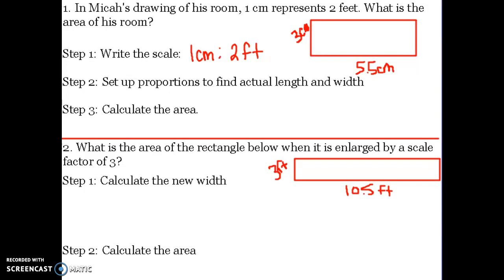Once you know your scale, you set up proportions to find the actual length and width. For my proportion, the scale is one centimeter to two feet, and I'm going to set that equal to the width, which is three centimeters, and I want to know how many feet. That's just for the width. I also have to do the same thing for the length, but let's find the actual width first.